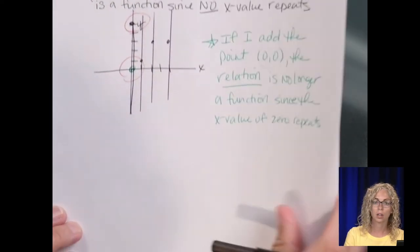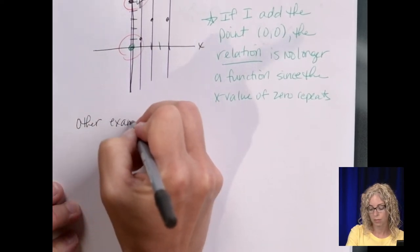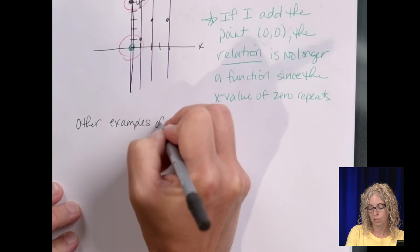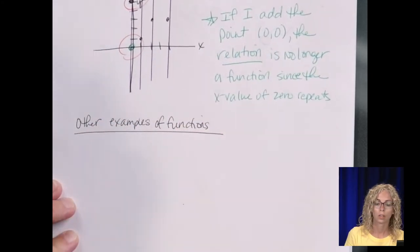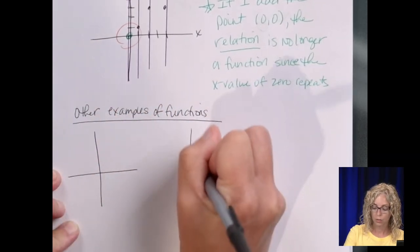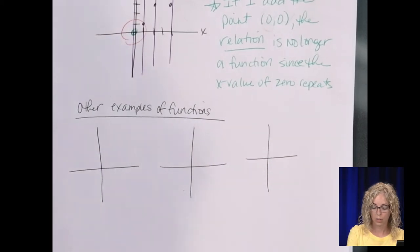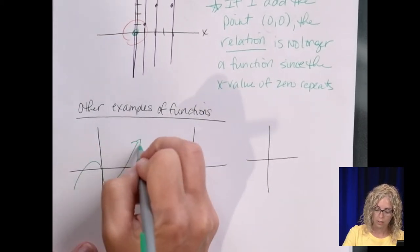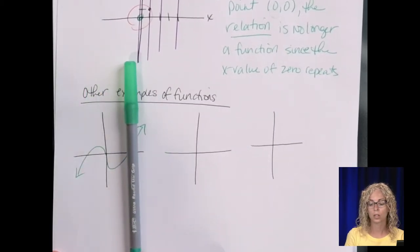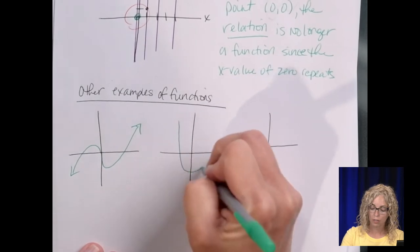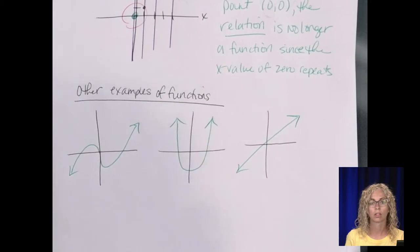So you may be given a set of points, you may be given a graph. So other examples of functions graphically, we'll do three. Something like this. We can use our pencil as the vertical line. You can see you can run it across, it's only going to touch once. Obviously, our quadratic function is a function, and the linear function.